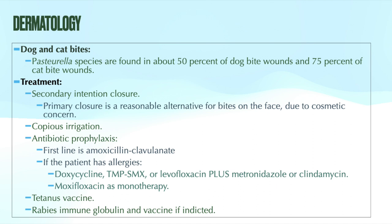Antibiotic prophylaxis is suggested for all patients that undergo primary closure of either a dog or cat bite, and they should have the wound checked at 24 to 48 hours to assess for signs of infection. Other indications for antibiotic prophylaxis with animal bites include wounds on the hand or face, genital area, wounds in close proximity to a bone or joint, wounds in an area of underlying venous compromise, immunocompromised patients including those with diabetes, deep puncture wounds or lacerations especially due to cat bites, and wounds associated with a crush injury.